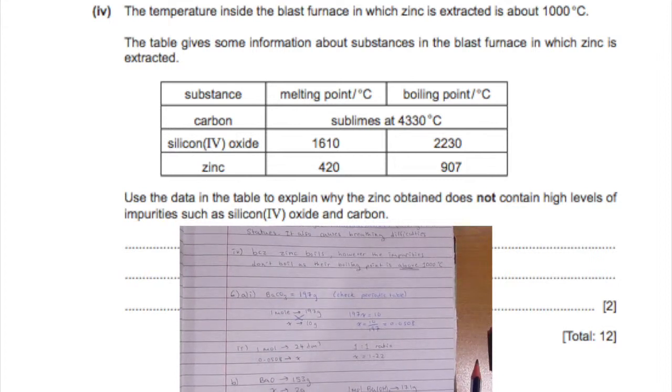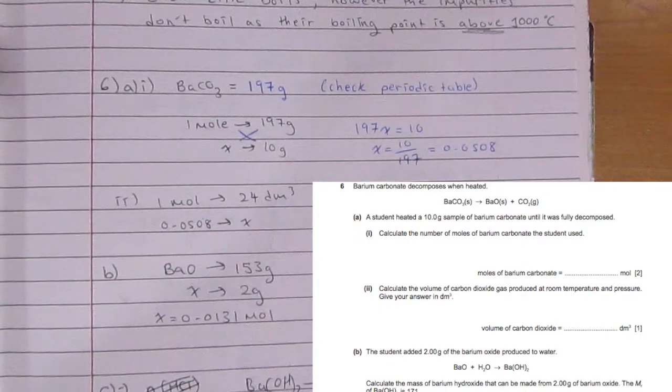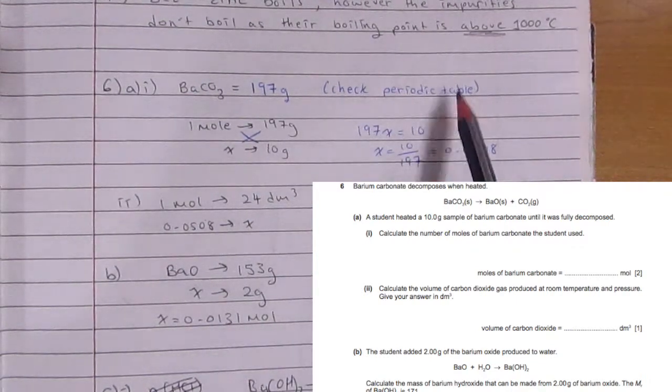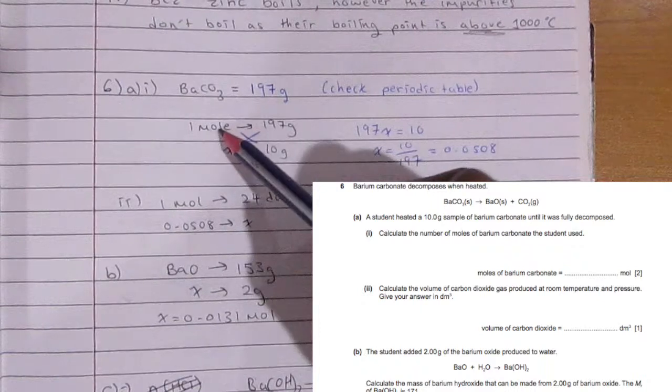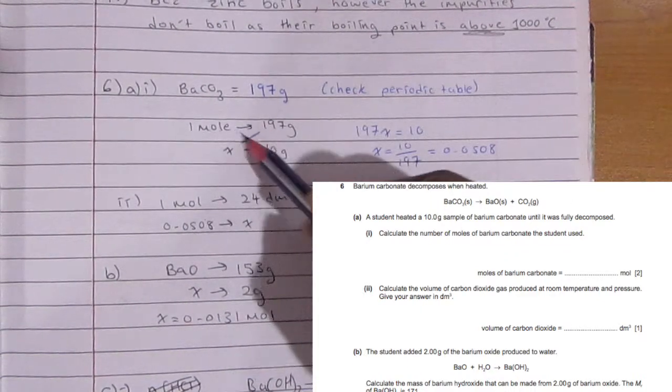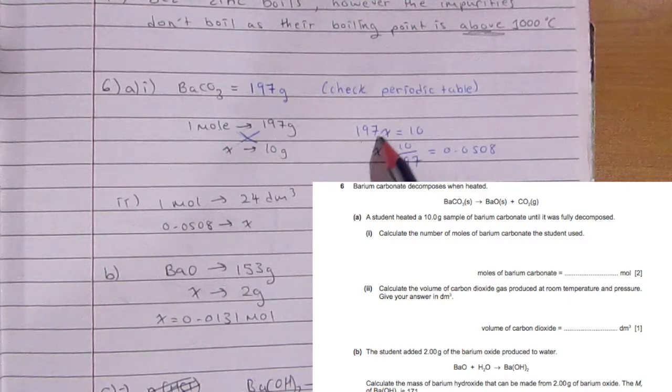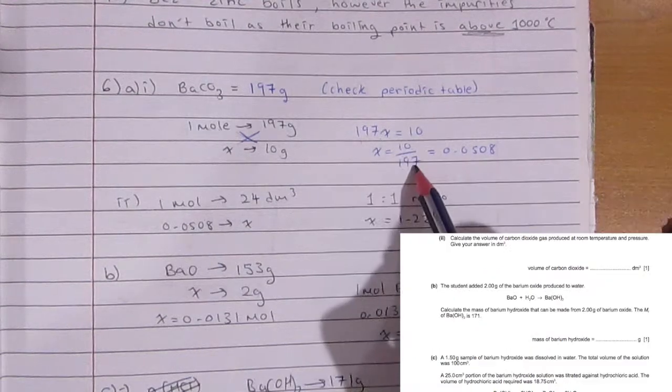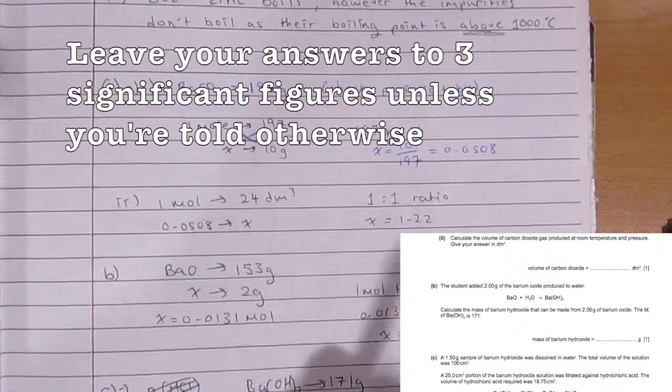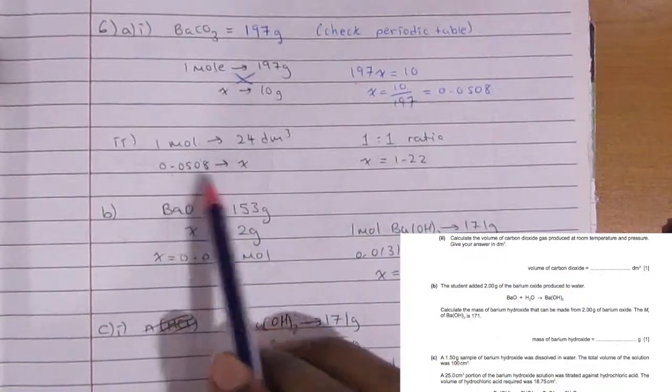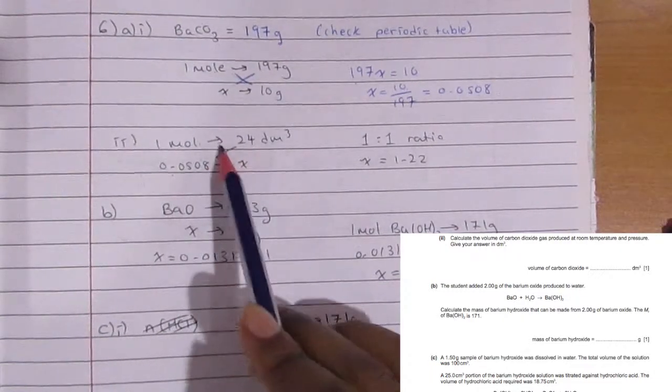Now for question six, you have barium carbonate which is 197 grams. You can check the periodic table to get the separate mass values and then you just add them up. So one mole is 197 grams, we want 10 grams, so how many moles is that? You cross multiply and get 0.0508 moles.